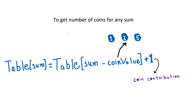For example, to calculate total coins for sum 5 using only coin denomination 1: table[5] = table[5 - 1] + 1 = table[4] + 1. So whatever value is in table[4], plus 1, gives our answer for table[5]. Since we have multiple coins of different denominations with unlimited supply, we calculate the number of coins for every combination and take the minimum.